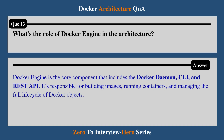Question 13: What's the role of Docker engine in the architecture? Docker engine is the core component that includes the Docker daemon, CLI, and REST API. It's responsible for building images, running containers, and managing the full lifecycle of Docker.